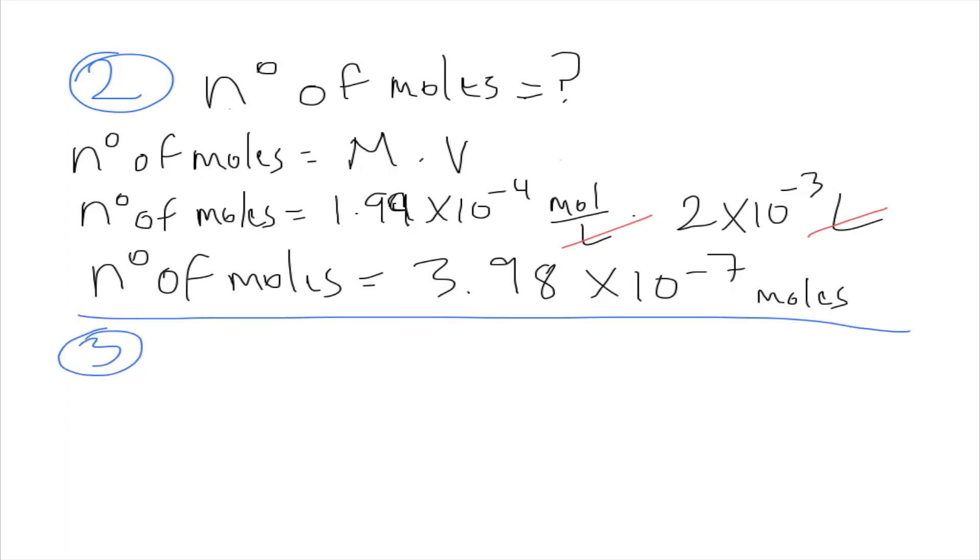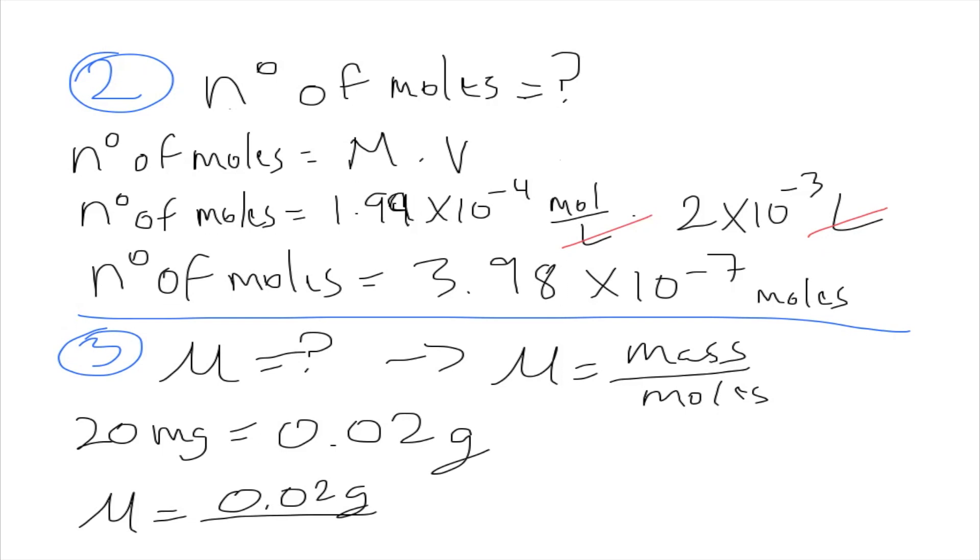Our third and final step is to obtain the molar mass by dividing the mass over the number of mols. We have a mass of 20 milligrams which is equal to 0.02 grams. We'll then plug in the values: 0.02 grams over 3.98 × 10^-7 mols. And we're going to get 50,251.3 grams per mol. That is the final answer.